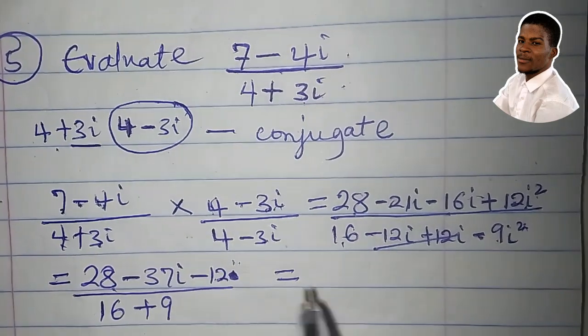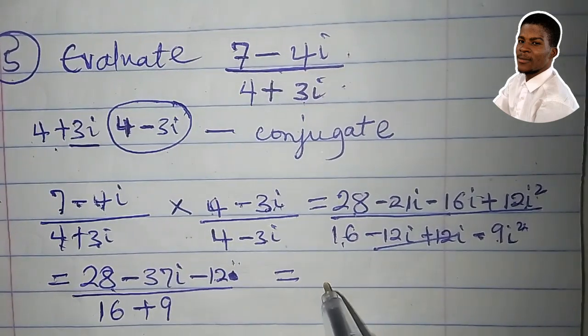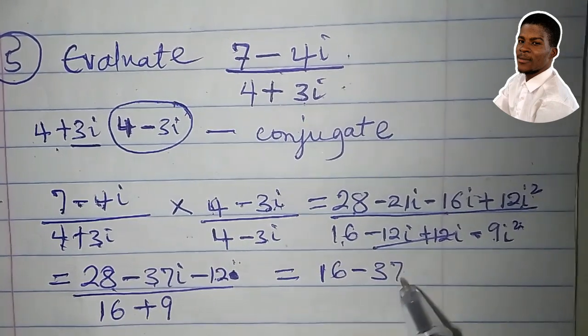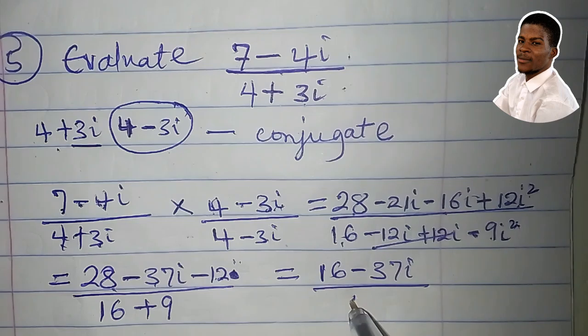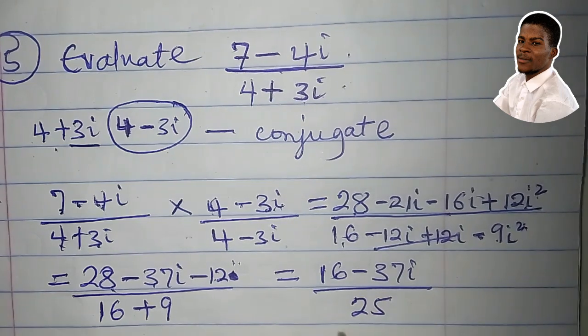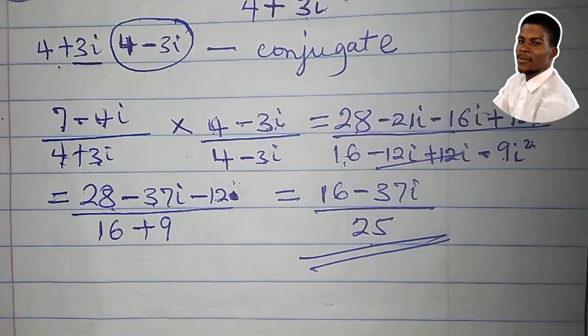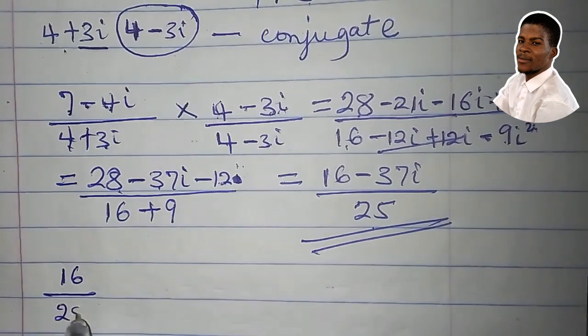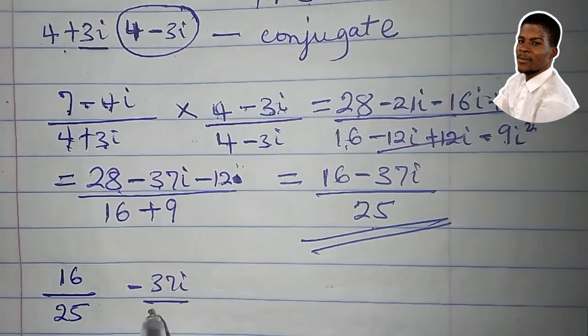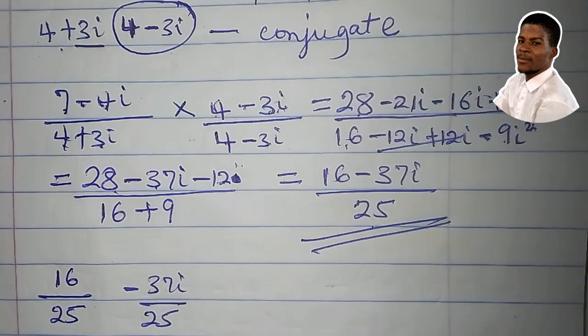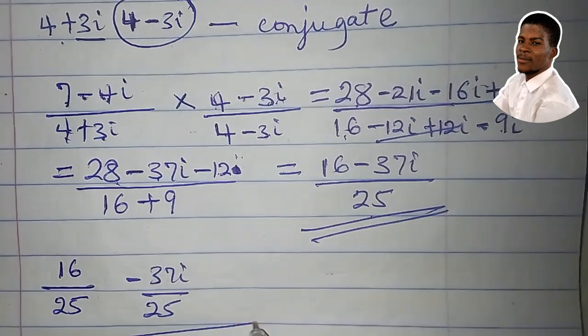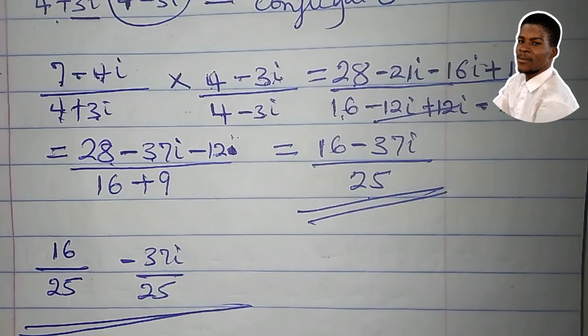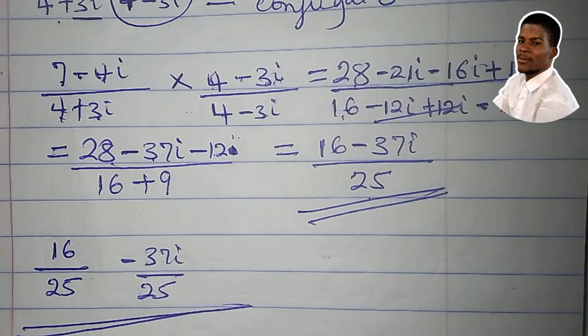28 minus 12 is 16. Minus 37i all over 16 plus 9 is 25. We can rewrite this as 16 over 25 minus 37i over 25. Whichever way, we are still on point. Or we can even go as far as breaking it down to decimal numbers. It's still accepted.